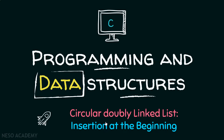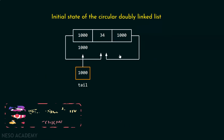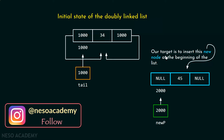In this presentation, we will learn how to insert a new node at the beginning of the circular doubly linked list. Let us suppose this is the initial state of the circular doubly linked list, and the tail pointer is pointing to this particular node. Our target is to insert this new node at the beginning of this particular list.